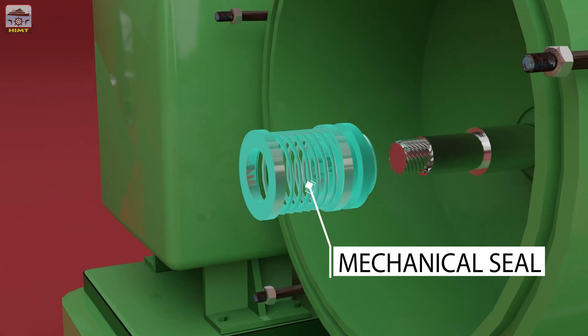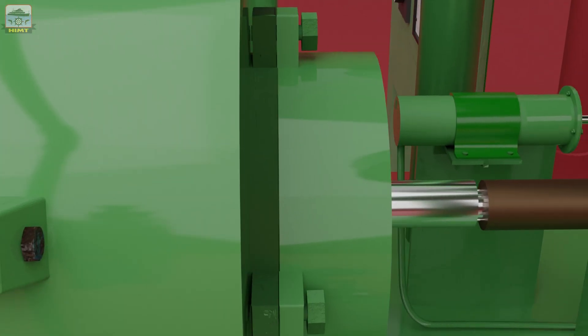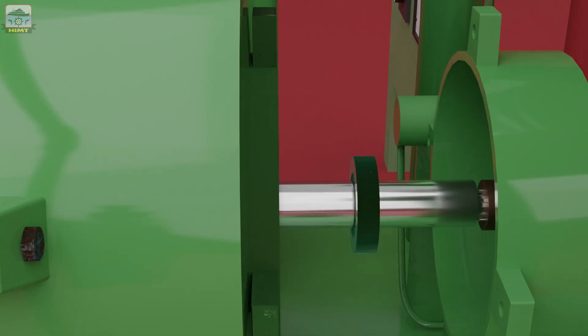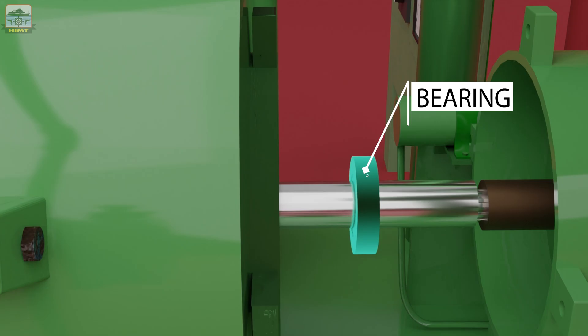The mechanical seal is fitted behind the impeller. A bearing is fitted inside this bearing housing.